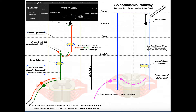Just like we had the medial lemniscus in the DCML pathway, here we have the spinothalamic lemniscus, and it's quite long. It goes all the way up the spinal cord, crosses into the medulla, continues up through the pons, and then terminates at the thalamus. The axons of this tract synapse with the third-order neuron, whose cell bodies are specifically in the VPL nucleus of the thalamus — the ventral posterolateral nucleus.